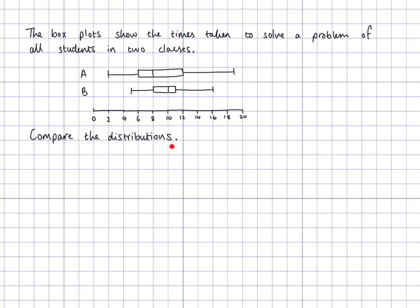When you compare distributions, there are a couple of things you need to do. Bullet point number one: you want to compare a measure of average, or measure of central tendency. You can choose the mean, the median, or the mode — any of those would be fine. Whatever is most suitable for the data given is the one you should choose. In this case, because we've got box plots, the median is the best measure of average.